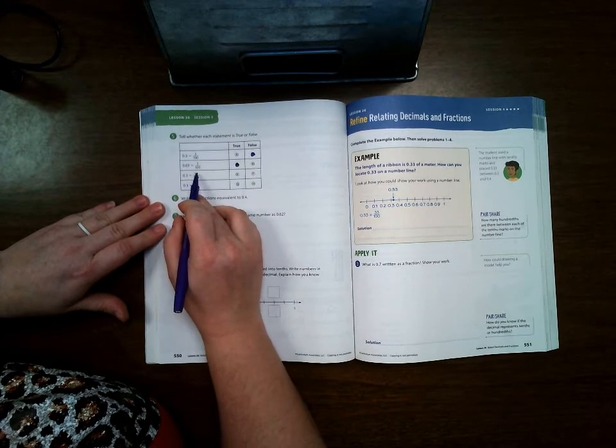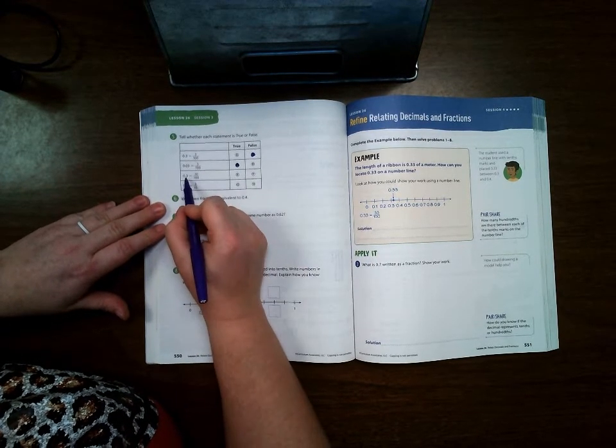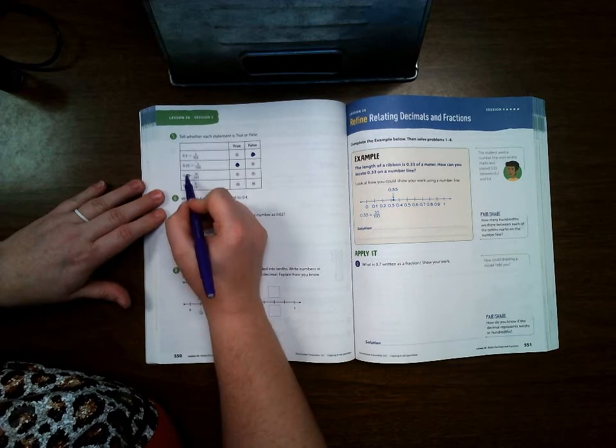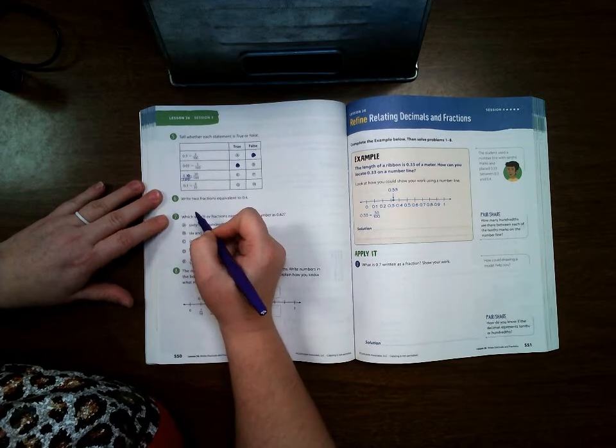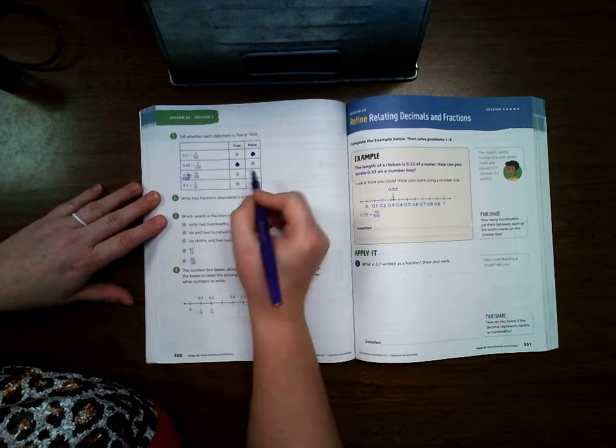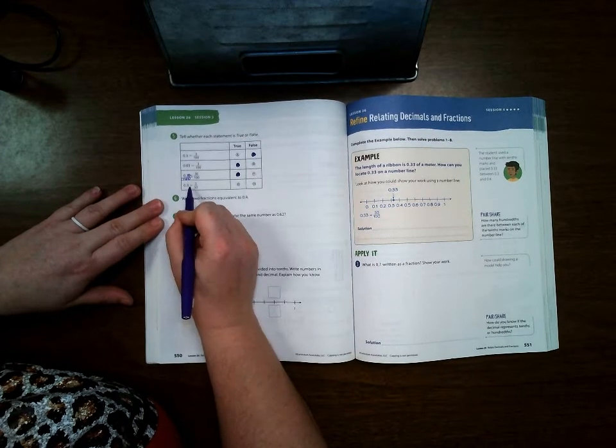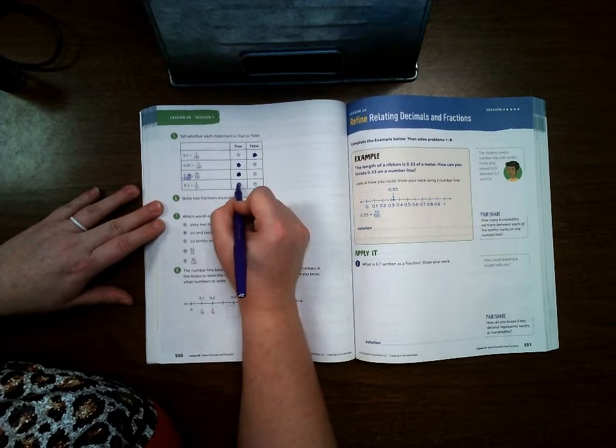Three tenths is the same as thirty hundredths? Well, if you change 3/10 and add a zero on the back of it, it can become 30/100 because those are equivalent fractions, so that one is true. Three tenths equals three tenths? That one is true also.